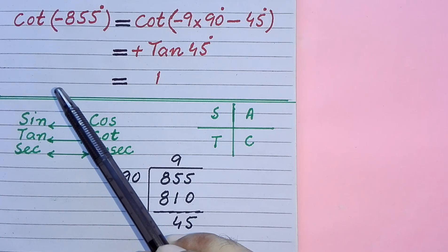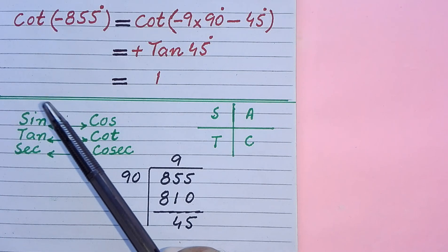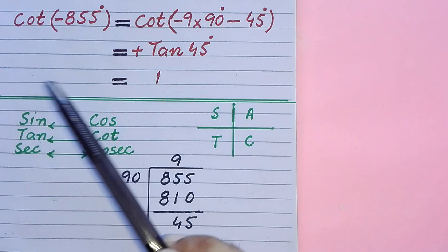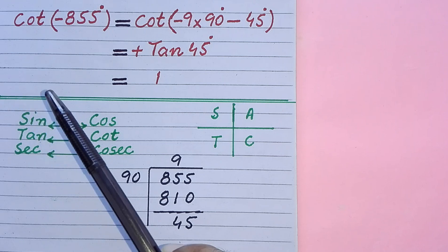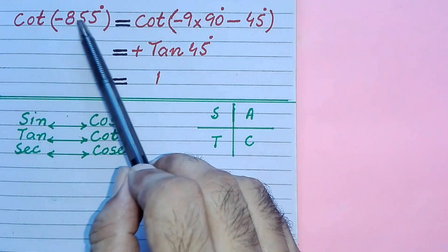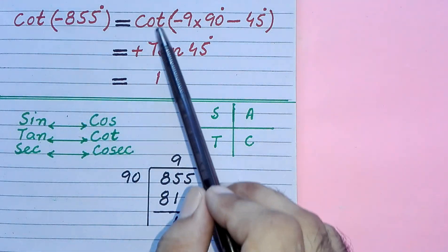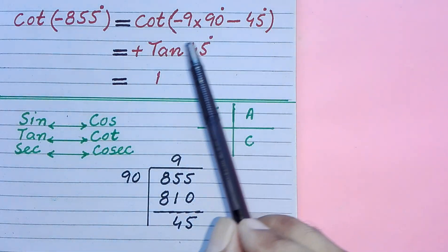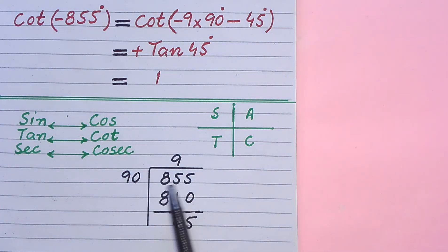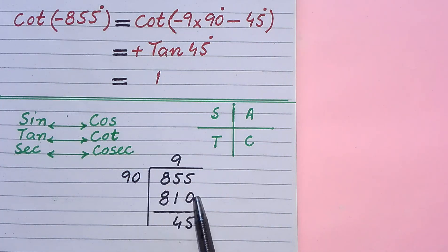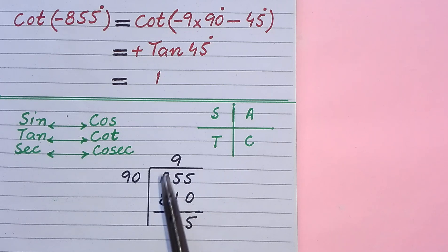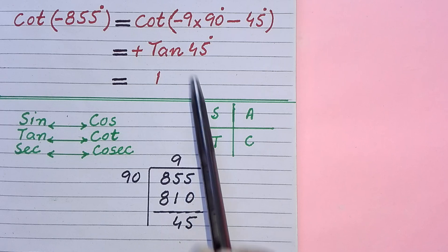How can we find the value of a trigonometric function without using a table? First of all, we have to express the given angle as a multiple of 90 degrees. We take the angle and divide it by 90. Nine 9s are 810 and 45 is the remainder, so the given angle can be written as 9 multiplied by 90 plus 45.